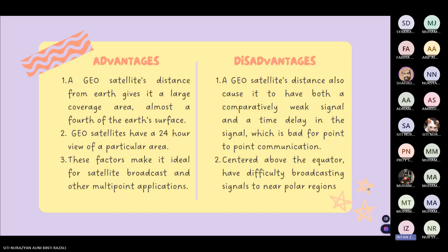For the disadvantages: first, a GEO satellite's distance also causes it to have comparatively weak signal and a time delay in the signal, which is bad for point-to-point communication. Lastly, being centered above the equator, it has difficulty broadcasting signals to near polar regions. Next, I will pass to Azean.